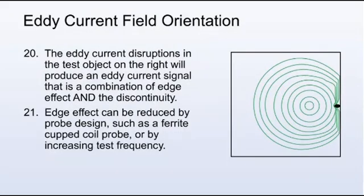The eddy current disruptions in the test object on the right will produce an eddy current signal that is a combination of edge effect and the discontinuity.